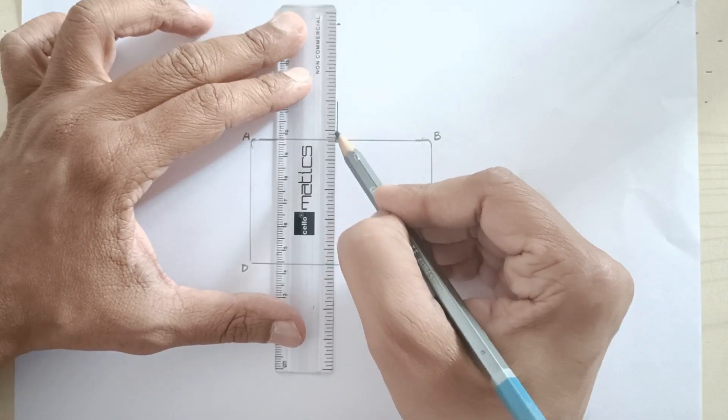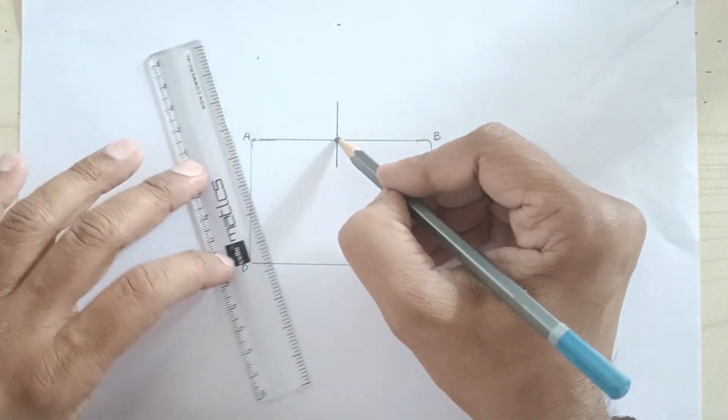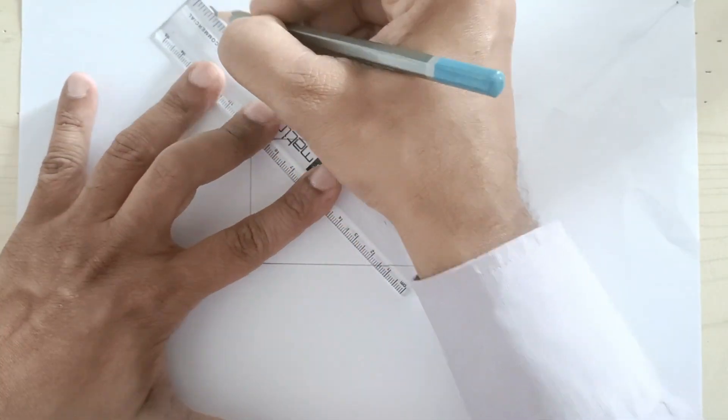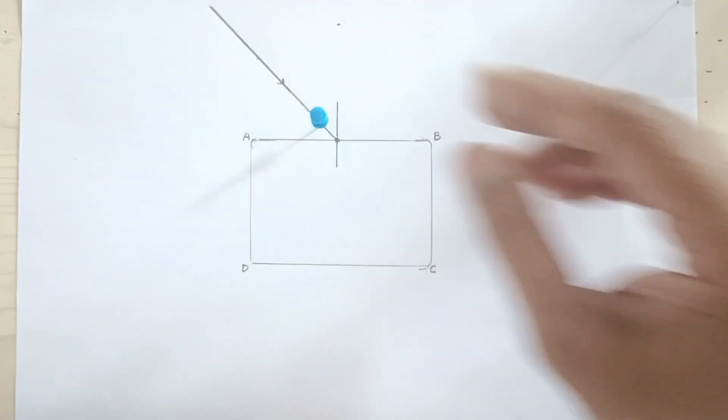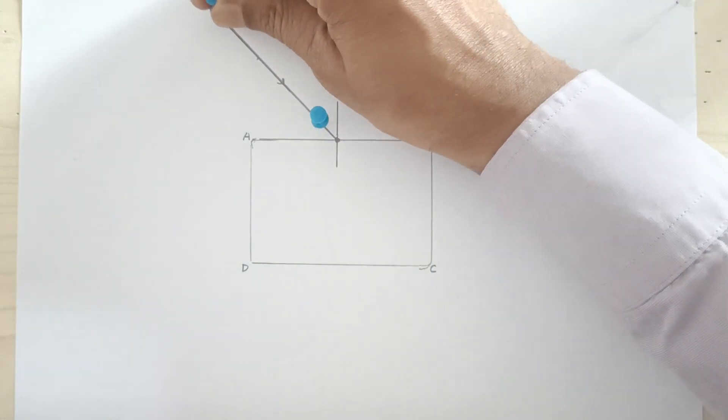Draw a perpendicular line which is normal using a scale. Join these two points. This becomes your incident ray. Fix two softboard pins on the incident ray at a distance more than 5 centimeters.